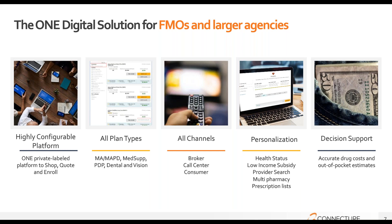Our direct consumer sites can be linked to any ConnectShare call center or broker site, so information is easily accessible to the agent, making the process for the consumer much easier and more streamlined. On our platform, consumers and agents can personalize the experience by adding health status, low-income subsidy status, provider network checks, pharmacy lookups, and drug lists. For decision support, our platform offers the most accurate drug costs and out-of-pocket estimates, so consumers have all the information they need to choose their best-fit Medicare plans. Our blue-button integration further streamlines the process for agents importing drug information for their beneficiaries.